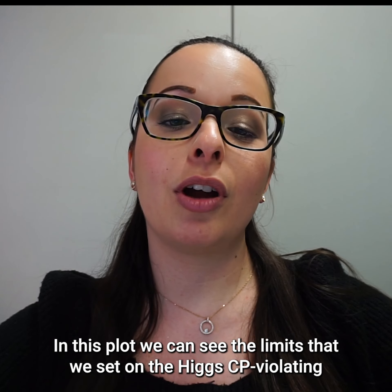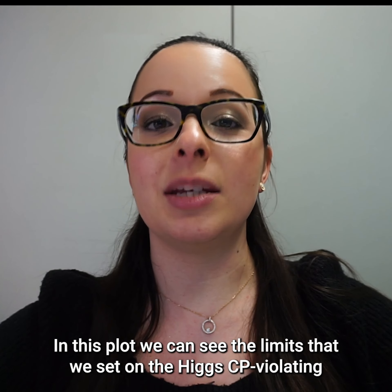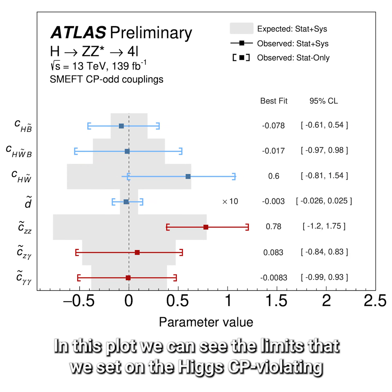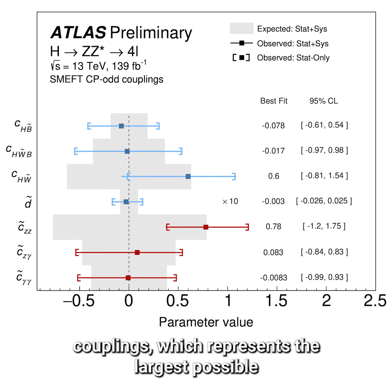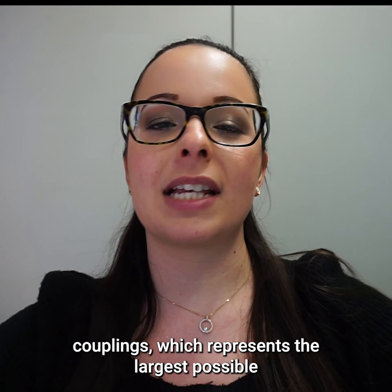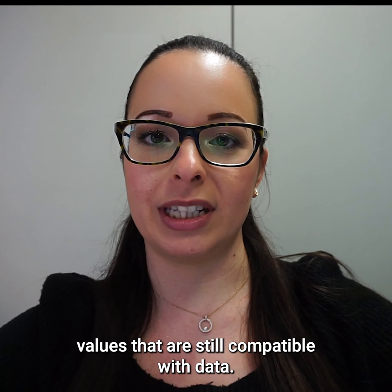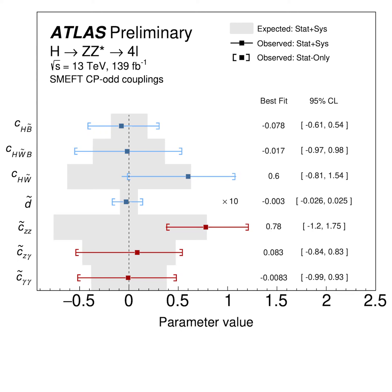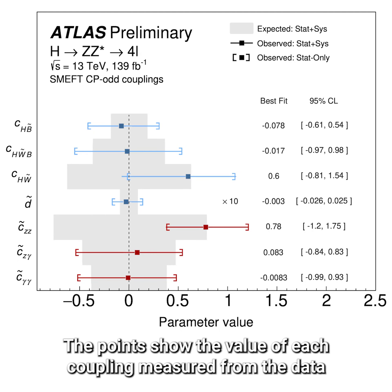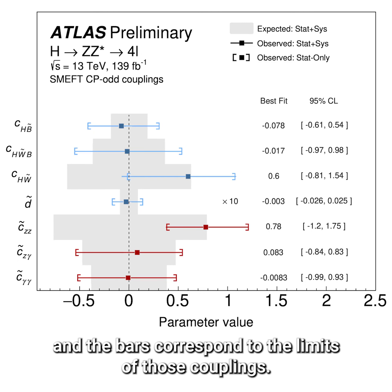In this plot, we can see the limits that we set on the CP violating couplings, which represent the largest possible values that are still compatible with the data. The points show the value of each coupling measured from the data, and the bars correspond to the limits of those couplings.